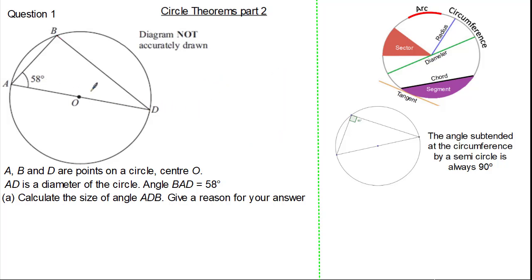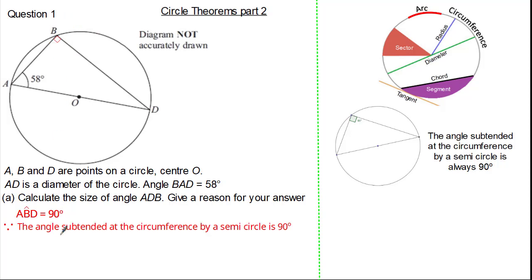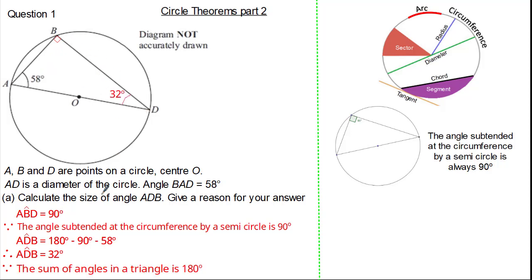As you can see we have a diameter and we have an angle subtended at the circumference by the semicircle. Therefore we know angle ABD must be 90 degrees, because the angle subtended at the circumference by a semicircle is always 90 degrees. Now we can work out angle ADB. Given we know angles in a triangle sum to 180, we do 180 subtract 90 subtract 58, which gives angle ADB as 32 degrees, because the sum of angles in a triangle is 180 degrees.